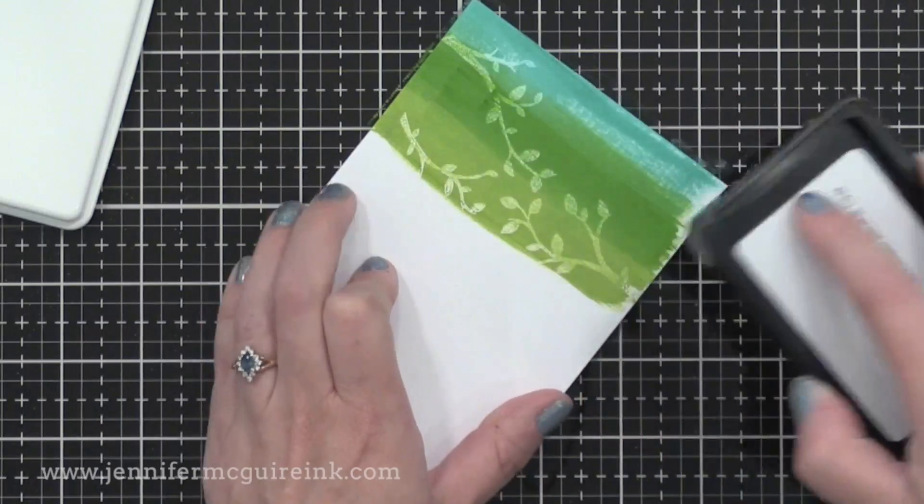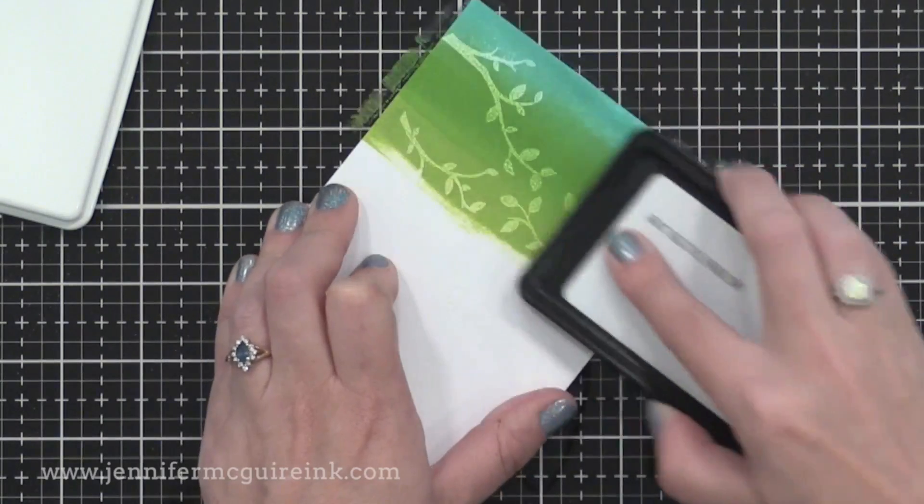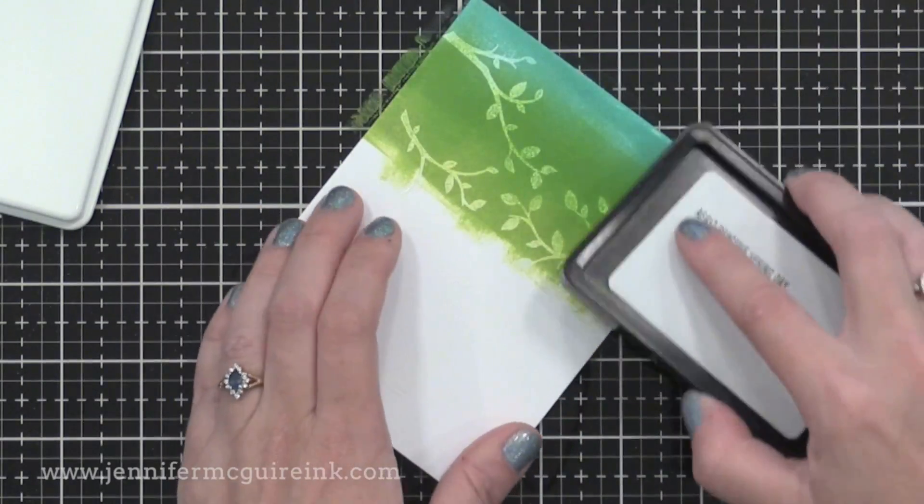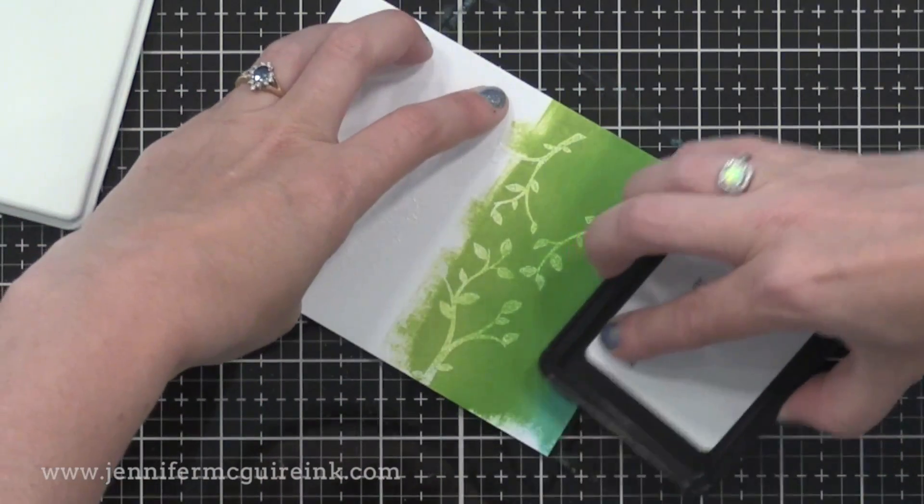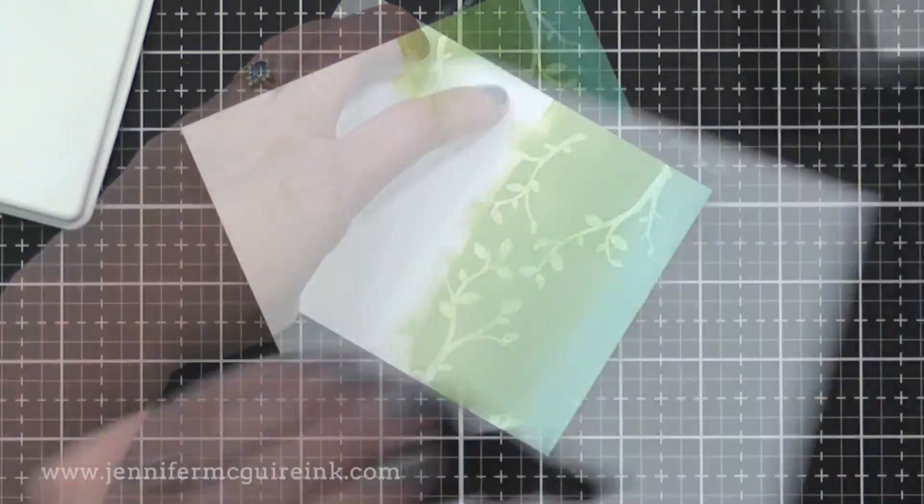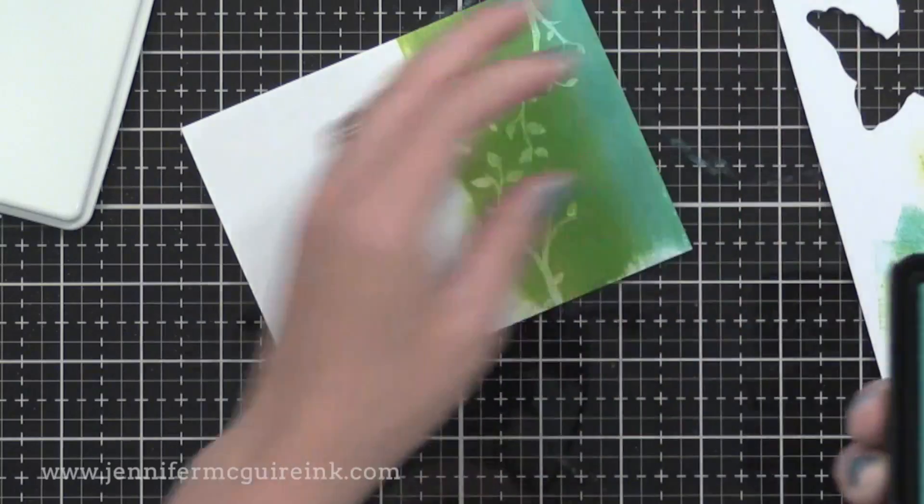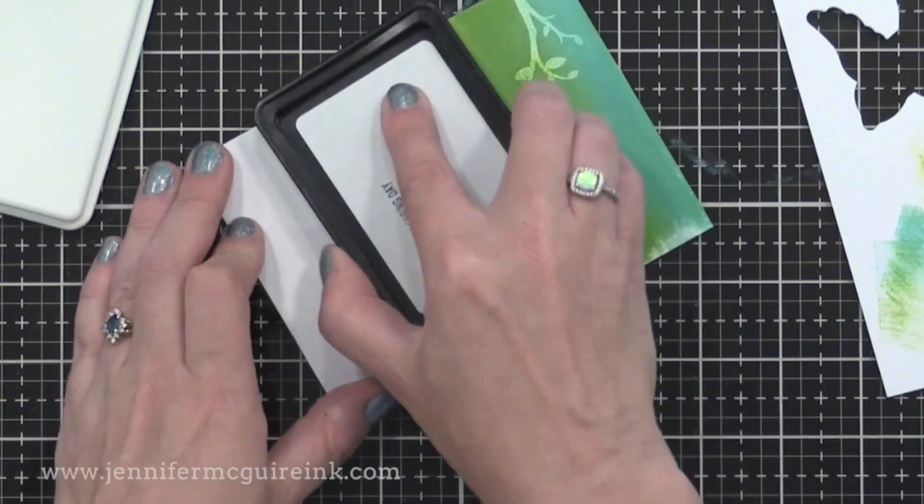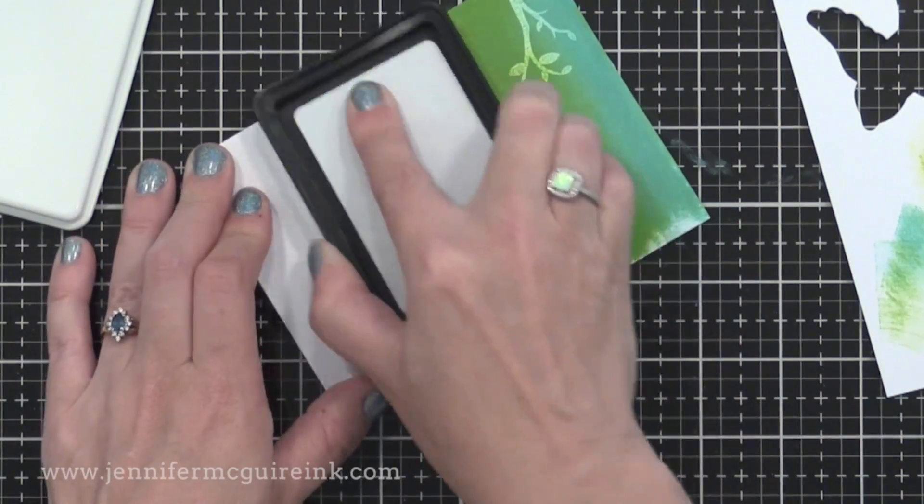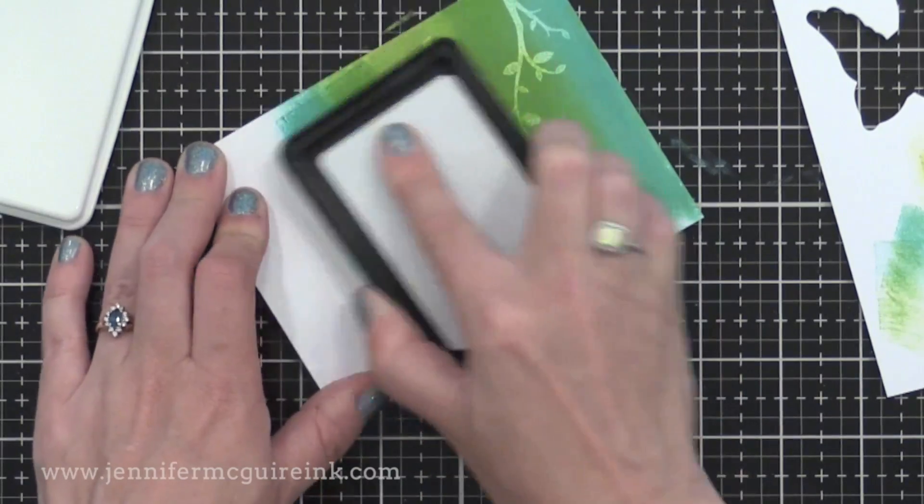This is a new ombre ink pad. You can see the three parts of the ink that apply three different colors. I'm rubbing this back and forth across my stamped panel, and that way I can get like a stripe look going across it.